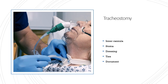First, assemble all your equipment, identify yourself to the patient, and explain the purpose of your interaction. If the cuff of the tracheostomy tube is inflated, the patient will likely not be able to speak, so use alternative methods of communication such as eye blinking, hand squeezing, nodding, pen and paper, dry erase boards, picture boards, iPads, tablets, electronic devices, or signing if they can sign. Perform hand hygiene, observe universal precautions, and provide privacy.